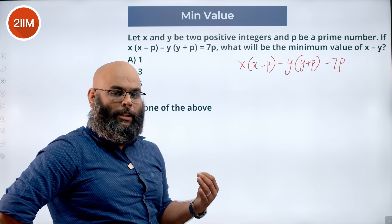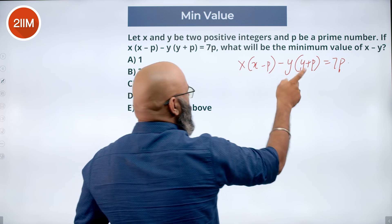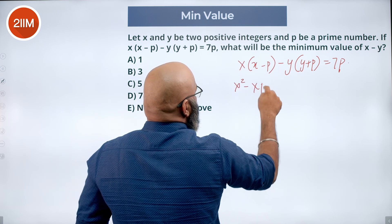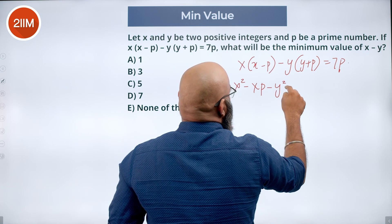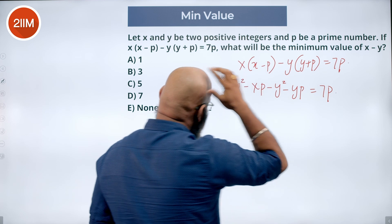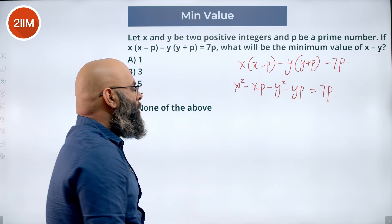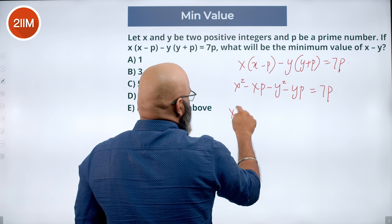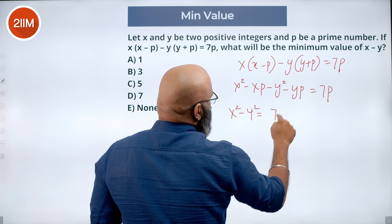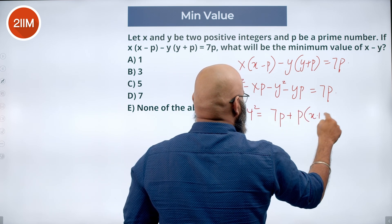I am trying to retain x minus y by doing a certain thing. Let's multiply the x and y inside. So we have x squared minus xp minus y squared minus yp equal to 7p. Let's take the p variables to the other side. You will have x squared minus y squared equal to 7p plus p into (x plus y).